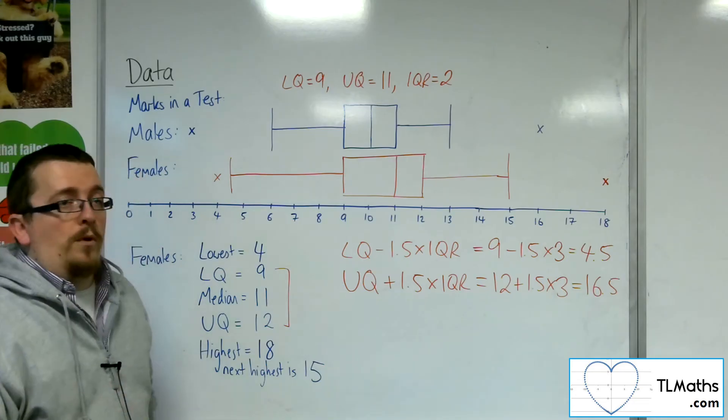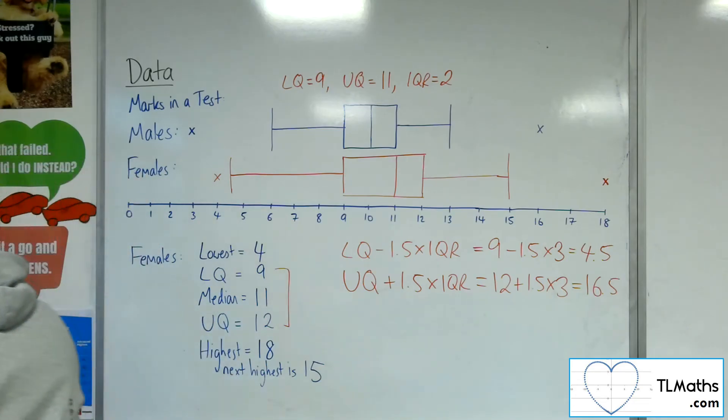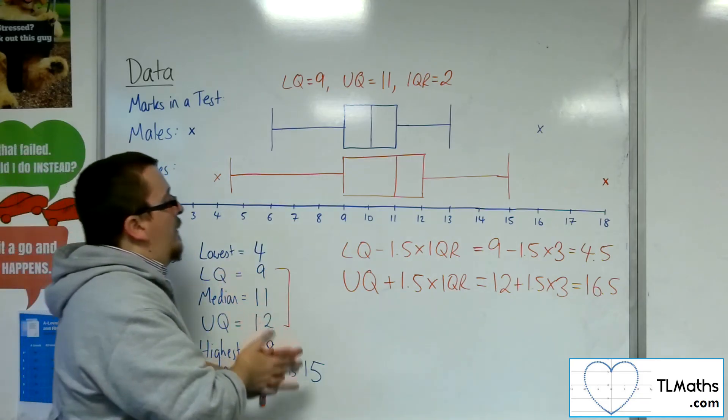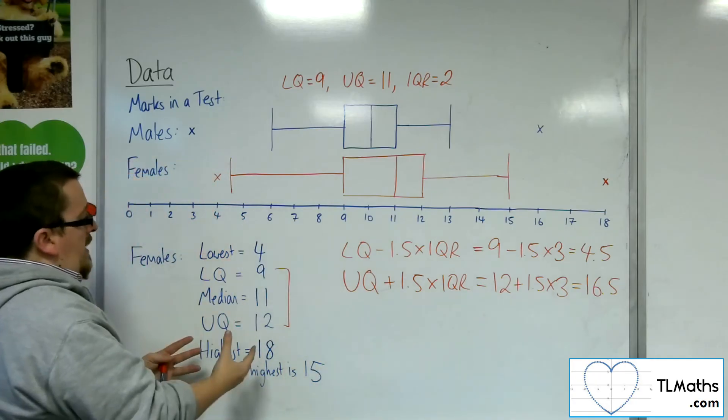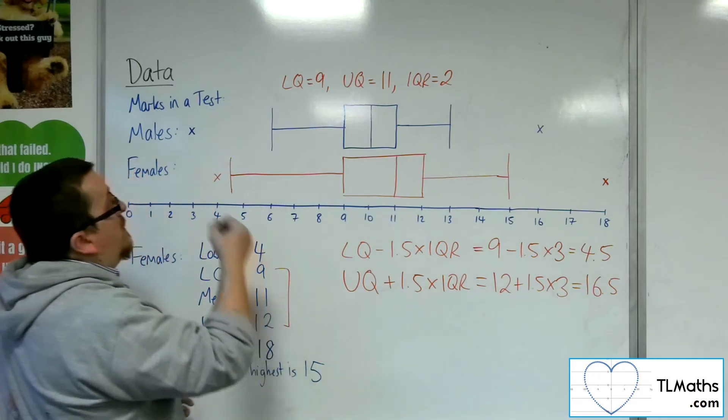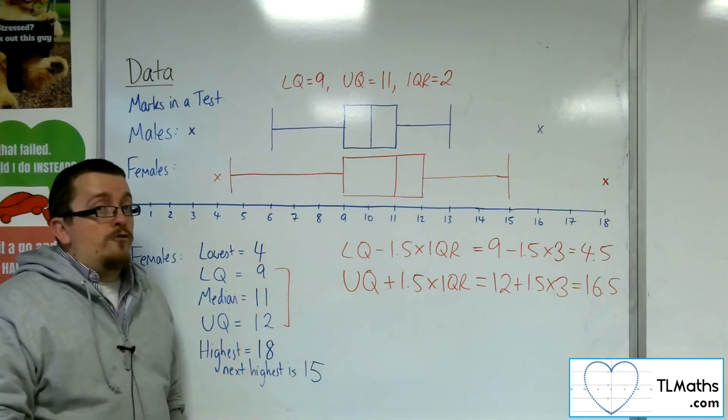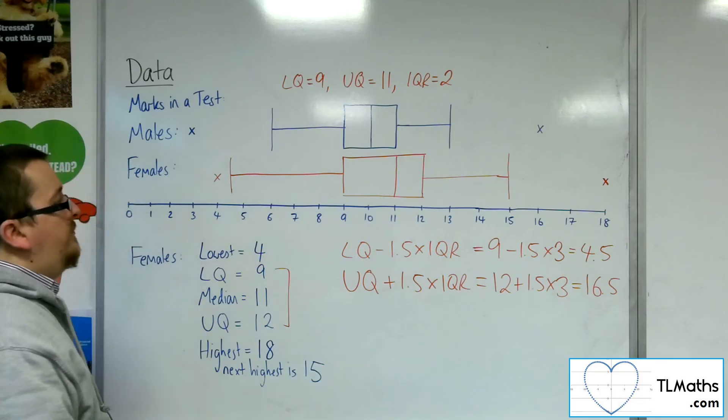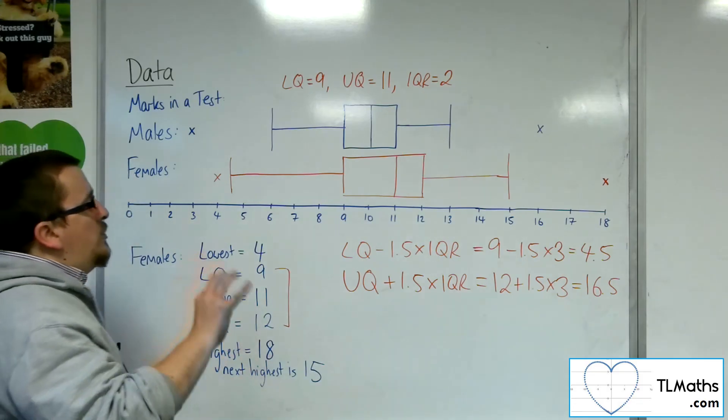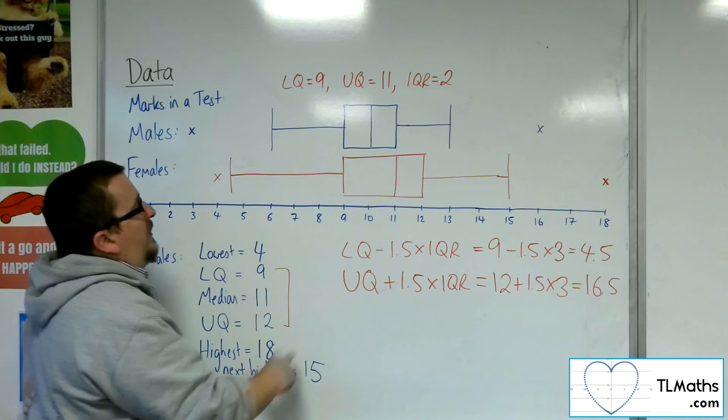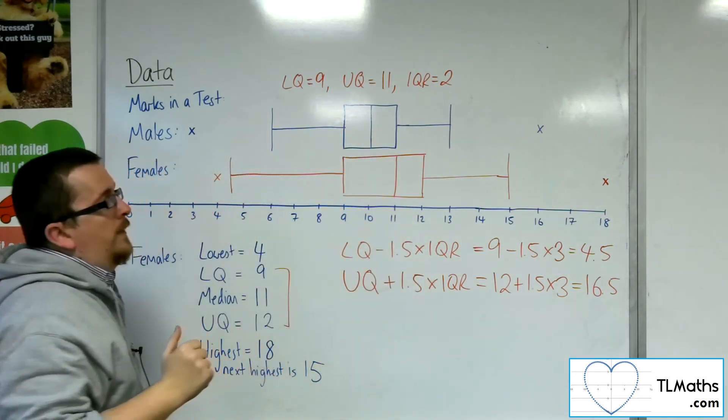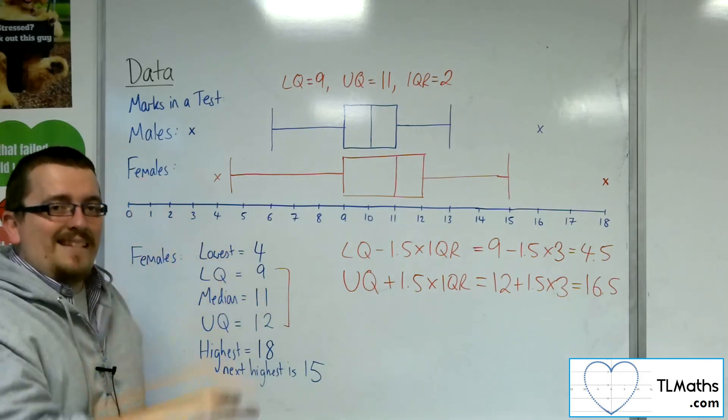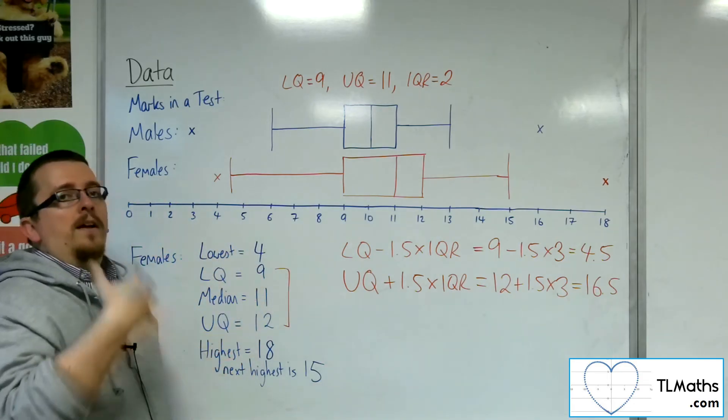So then if I wanted to compare these results, what is it telling me? Well, I can say that as the median for the females is larger than the median for the males, that on average the females have performed better in the test. Next, the interquartile range for the females is larger than that for the males. So that means that the females were less consistent in their results than the males.